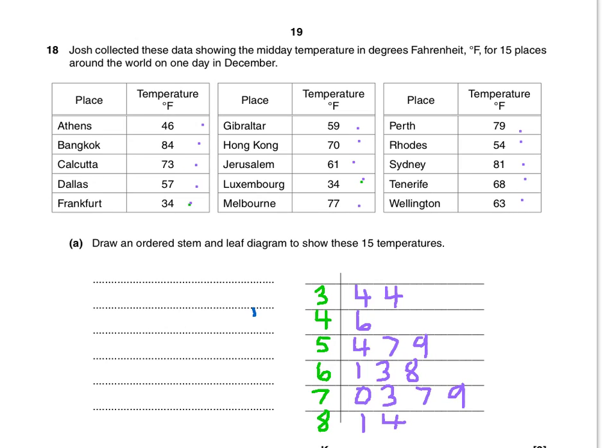Question 18. Josh collected data showing the midday temperature in degrees Fahrenheit for 15 places around the world on one day in December. Draw an ordered stem and leaf diagram to show these 15 temperatures.